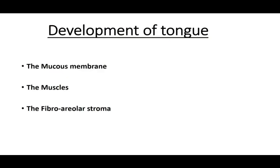When talking about the development of the tongue, we have to discuss: the mucous membrane, the muscles which are going to develop, and the fibroareolar stroma — that is, the bulk of the tongue covered with mucous membrane, then the muscles within, and then the fibroareolar stroma.